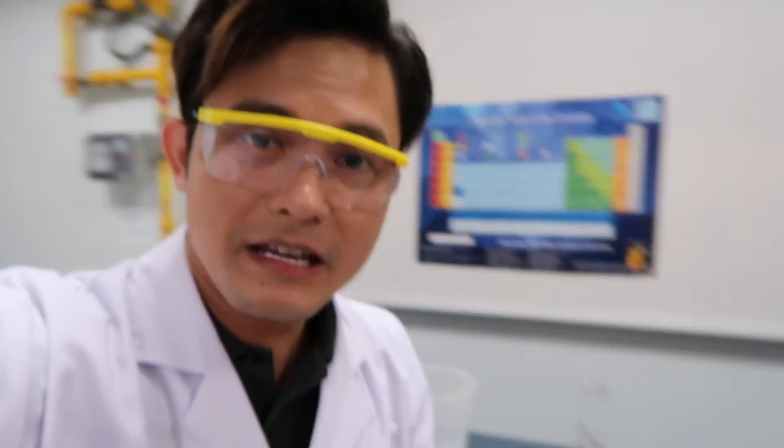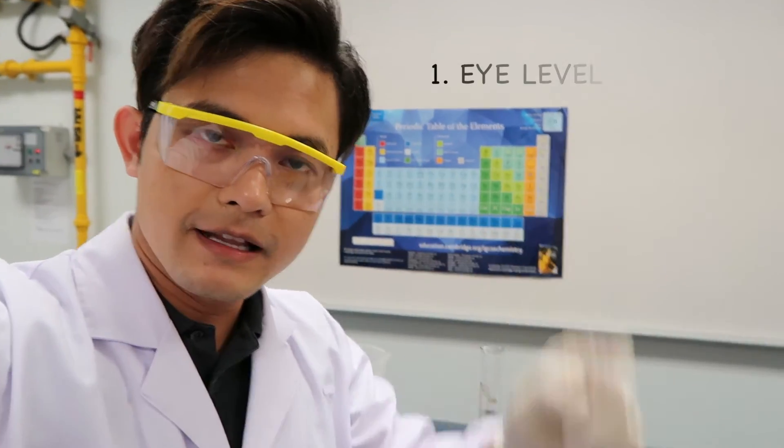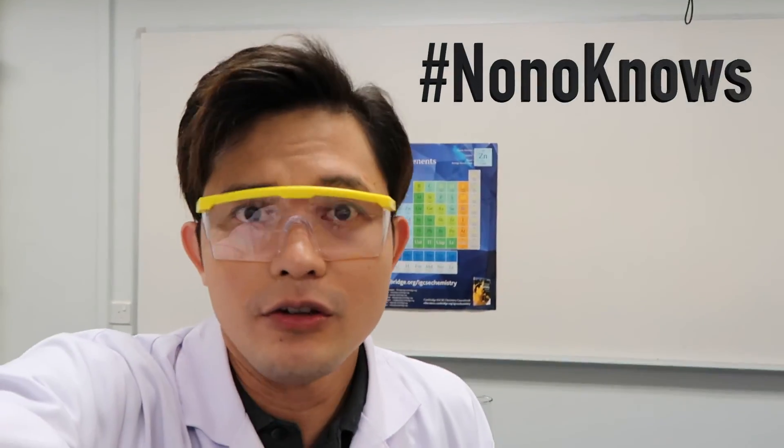So that's how you measure liquid in the measuring cylinder. Remember two things: eye level and measure at the lower or bottom part of the meniscus. So that's all folks. This is hashtag now you know. And now you know.